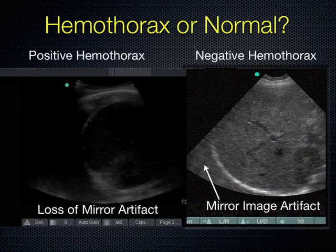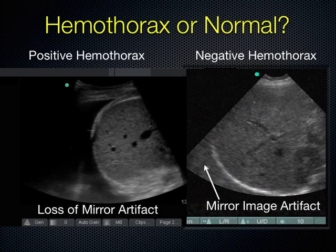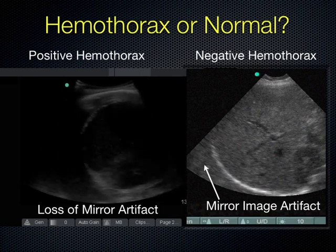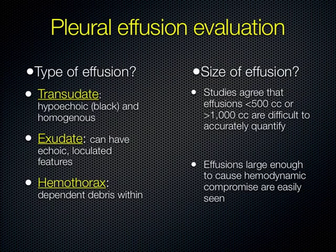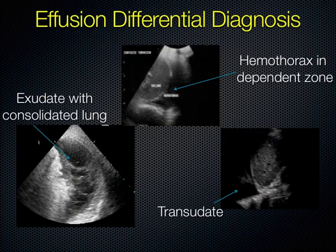Sometimes you can tell the nature of the effusion, and it guides management. If you're thinking about putting a thin needle in for thoracentesis, you might not choose that if it looks like thick fluid with fibrinous loculations or blood — you need to manage those differently. You should never definitively say transudate versus exudate based on ultrasound alone — send it to the lab to be sure. But you can pretty much tell when you look at it whether you'll need a needle or a chest tube. Notice on the transudative image, you can see the spine shadow behind the fluid — that's the spine sign.